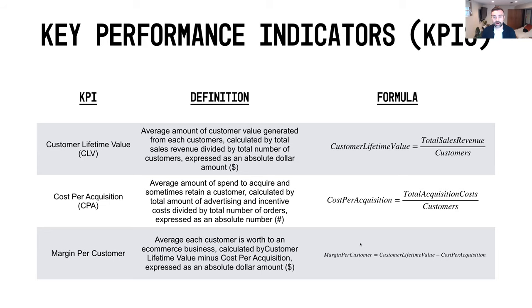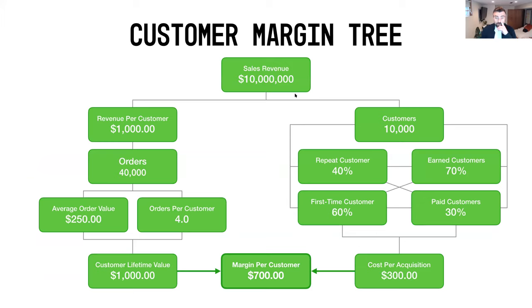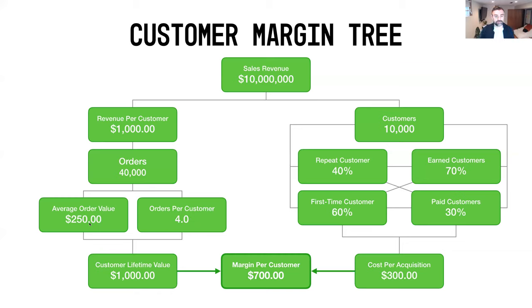Let's look at the margin tree filled in with example values. Say we have a business doing $10 million in sales revenue. That breaks down to 10,000 customers each generating $1,000, which yields 40,000 orders — because each customer is generating four orders in that cycle. Each of those orders is worth $250, so you can see how the math from the product margin tree flows through into the customer margin tree.